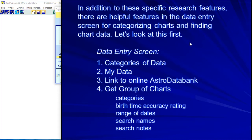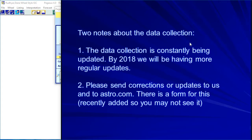So that's how the data is organized, categorized, and found, and what things look like in the data entry screen. I'm talking fast because I'm giving an overview of research in the Pegasus research software and trying to keep this to about half an hour. The data collection is constantly being improved — I'm making this video in July 2017, and by next year we'll be having more regular updates; we update it about once a year right now.